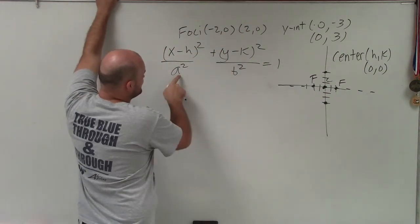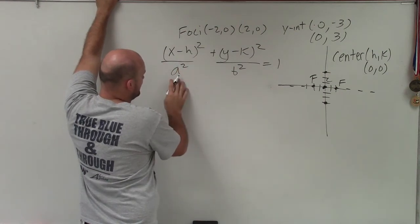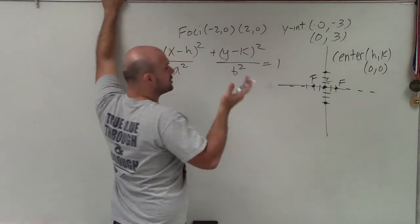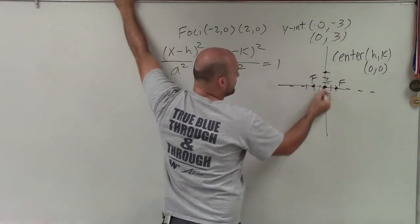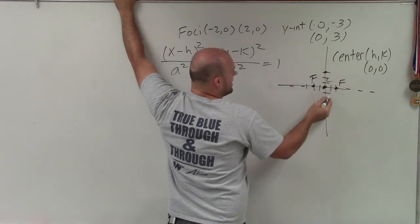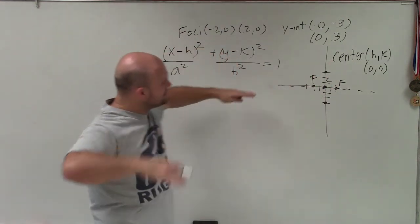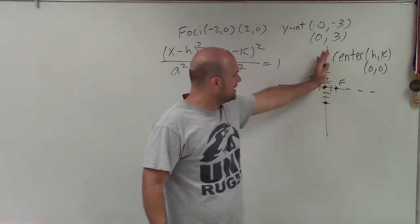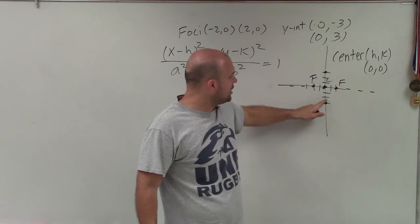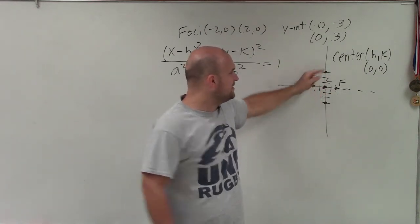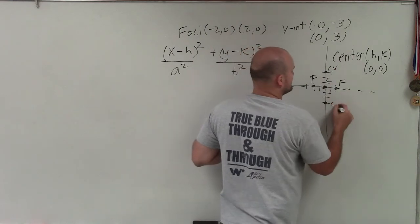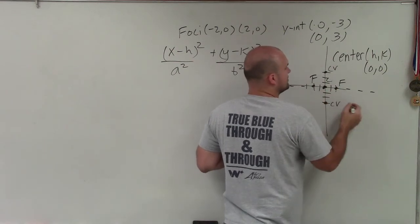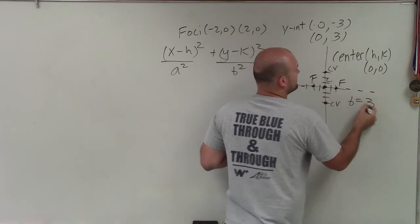a is the distance from our center to our vertices, which we don't have yet. b is the distance from our center to our co-vertices. Since the graph crosses at the y-intercepts, and if the major axis is horizontal, the minor axis is vertical and perpendicular to it. Therefore, these two y-intercepts are our co-vertices. The distance is 1, 2, 3, so the distance from our center to our co-vertices is 3. Therefore, b equals 3.